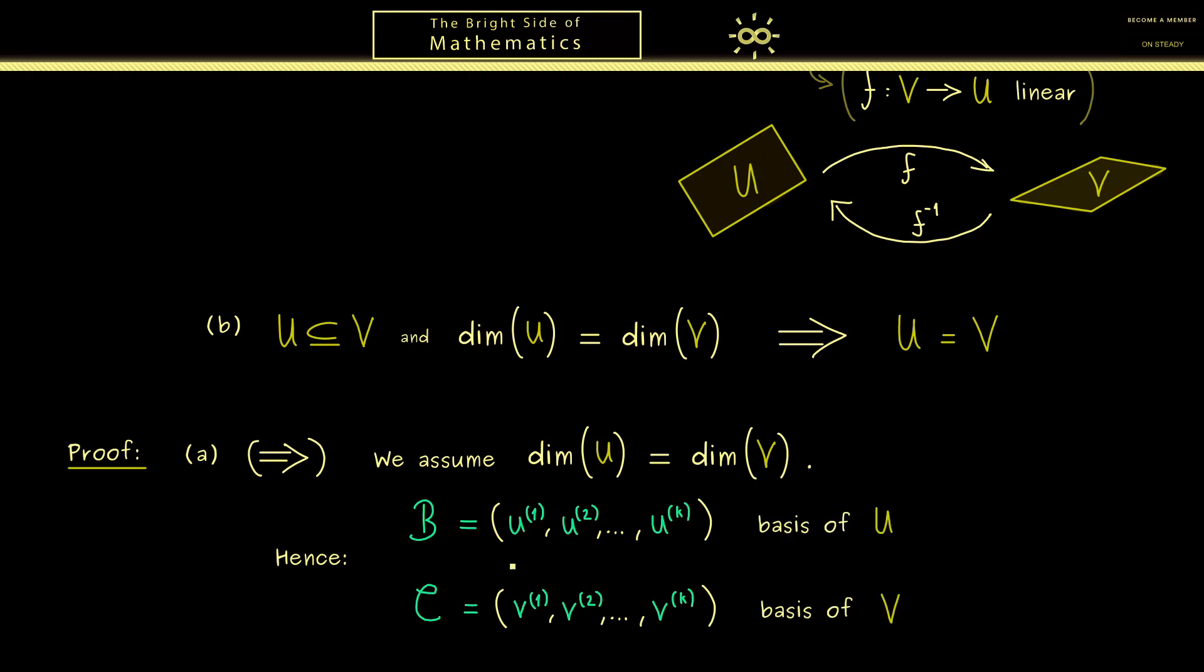Ok so now we know these vectors here lie in our subspace U and these ones in our subspace V. And then in the next step we can easily define our map F from U to V. So what we simply do is that we send U1 to V1, U2 to V2 and so on. So formally we simply say F of Ui is equal to Vi.